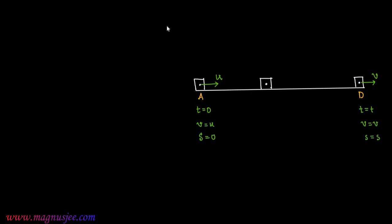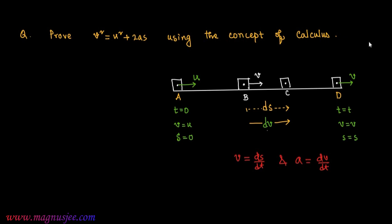Now we consider two intermediate points. This is the first intermediate point B, at which the body has velocity v. We can also consider another intermediate point C. The small displacement between the two points B and C is ds. Additionally, dv denotes the change in velocity between B and C, and dt is the small interval of time between B and C.